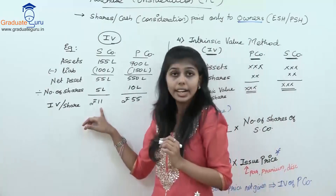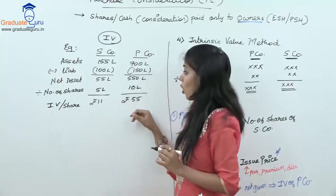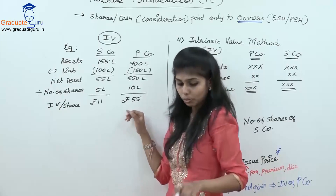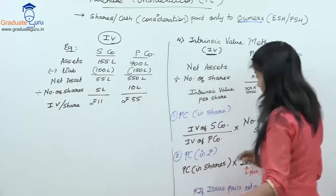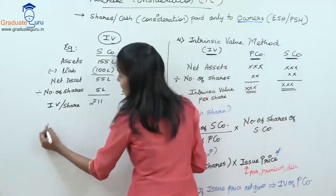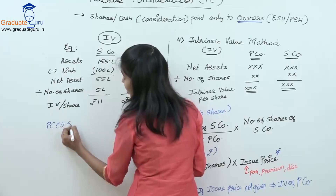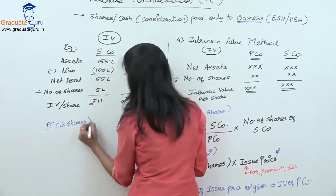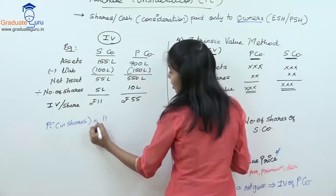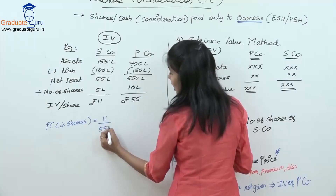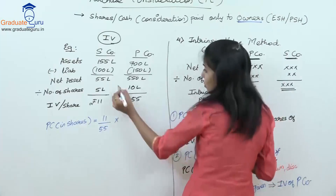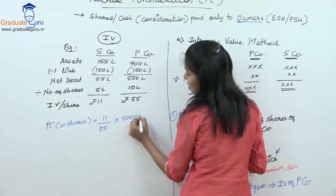So selling company ka IV aa raha hai 11 rupees aur purchasing company ka hai 55 rupees. Now when we apply this formula — PC in form of shares — IV of selling company that is 11, divide by IV of purchasing that is 55, and number of shares of selling company is 5 lakhs.